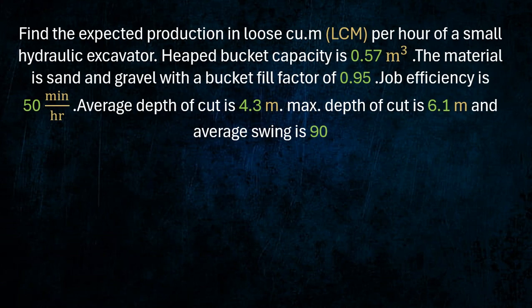Find the expected production in loose cubic meters per hour of a small hydraulic excavator. Heaped bucket capacity is 0.57 cubic meter. The material is sand and gravel with a bucket fill factor of 0.95. Job efficiency is 50 minutes per hour. Average depth of cut is 4.3 meters. Maximum depth of cut is 6.1 meters and average swing is 90 degrees.